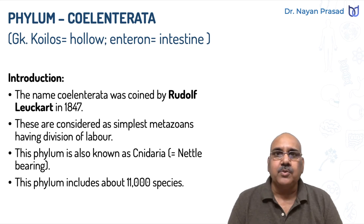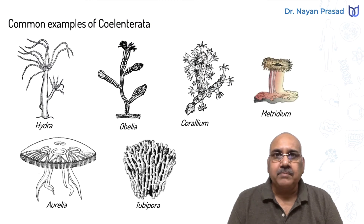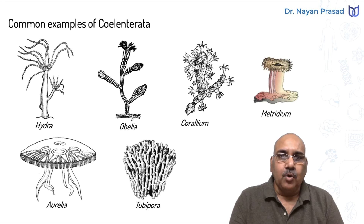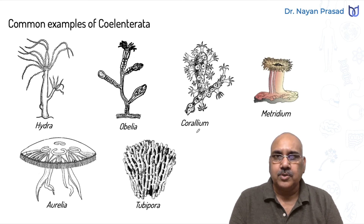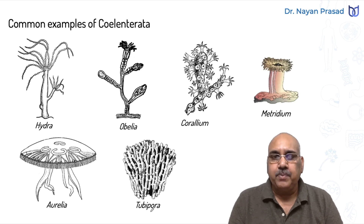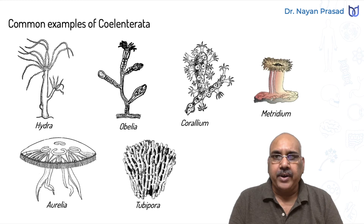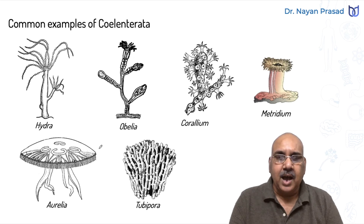This phylum includes about 11,000 different species. Common examples are Hydra, Obelia, Corallium (also called Coral), Metridium, Aurelia (common name Jellyfish), and Tubipora. Different members are under Coelentrata and they have two different forms: some are found in a tubular form while others have a ball-shaped, umbrella-like body, as in jellyfish.